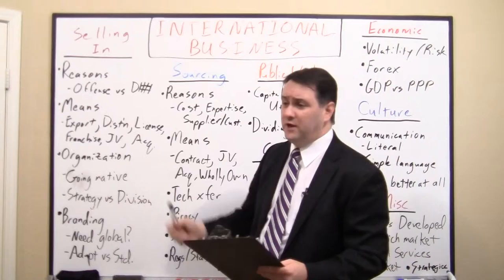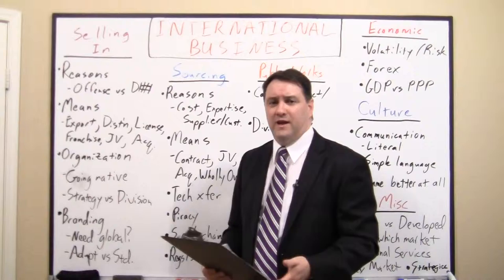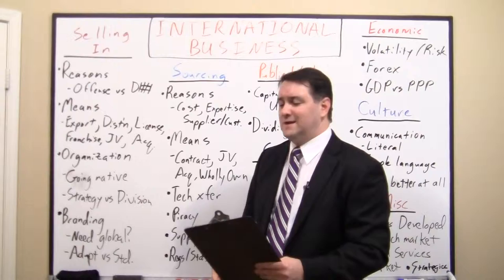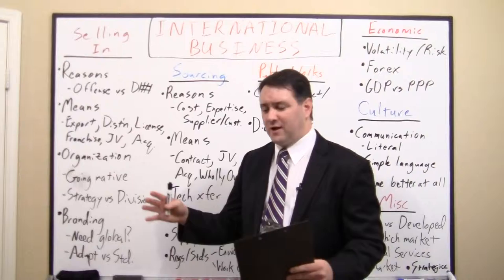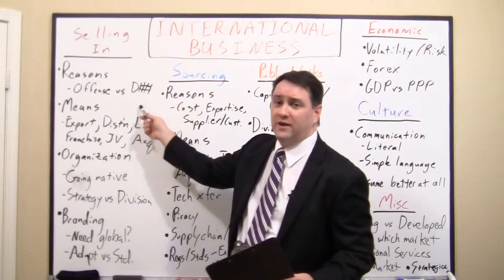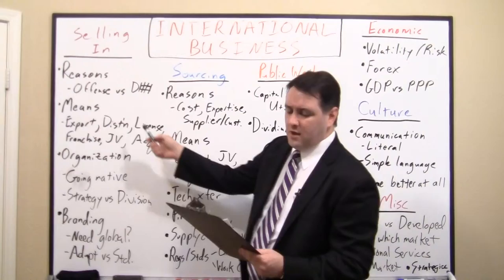An example of that would be the brewers. A lot of them have been globalizing — big players like Anheuser-Busch InBev and SAB Miller, which started as South African Breweries. Now that they've gobbled up a lot of the best assets internationally, some companies that weren't as aggressive on offense now find themselves on defense, trying to pick up assets to build scale to compete with these giants.